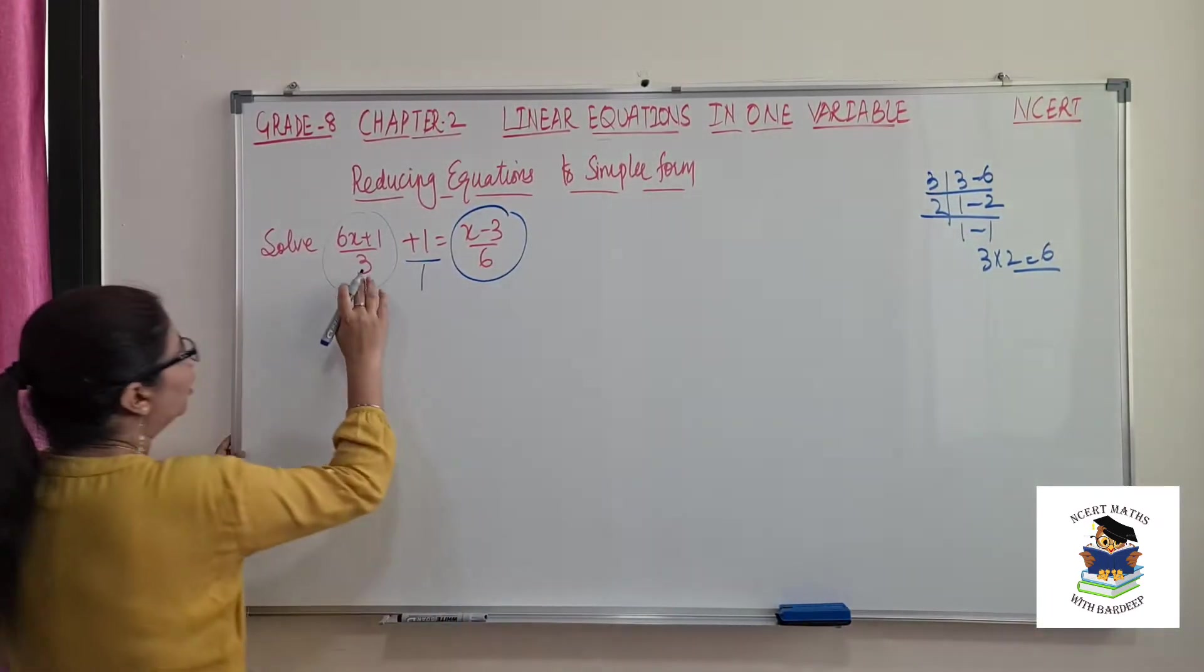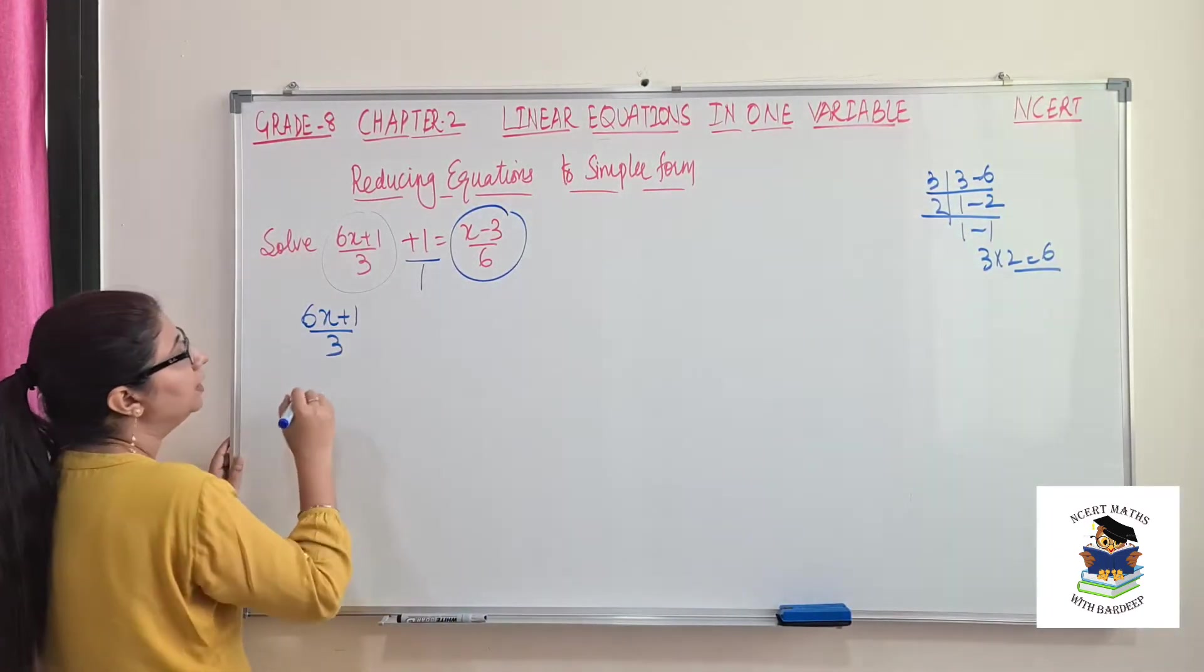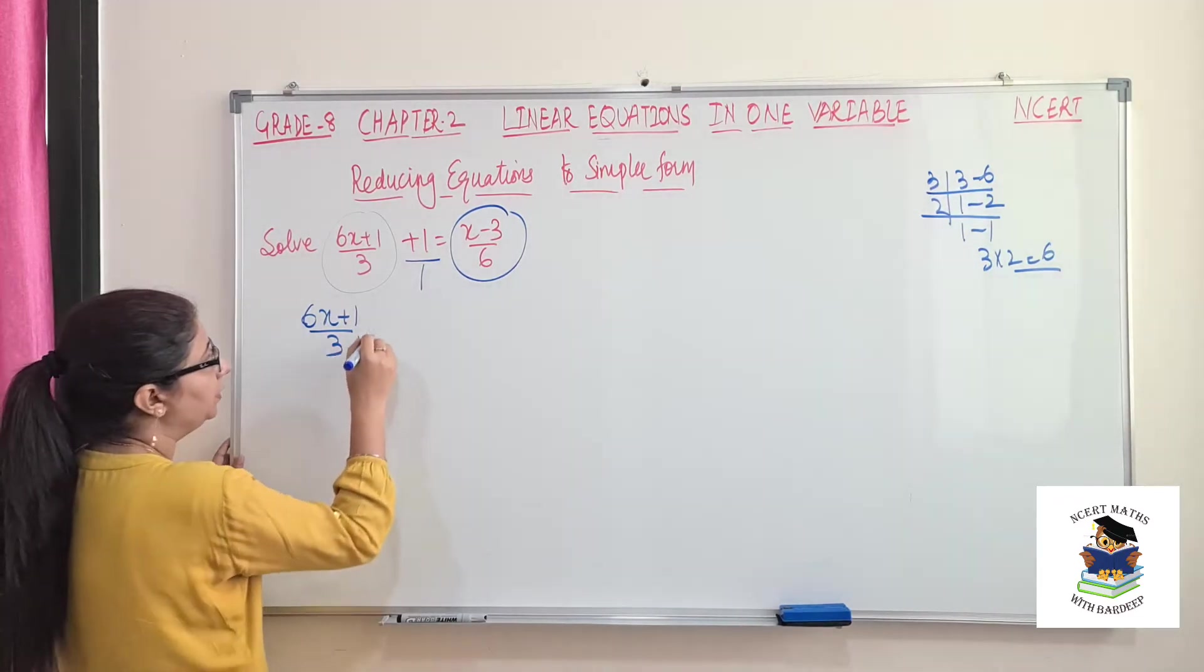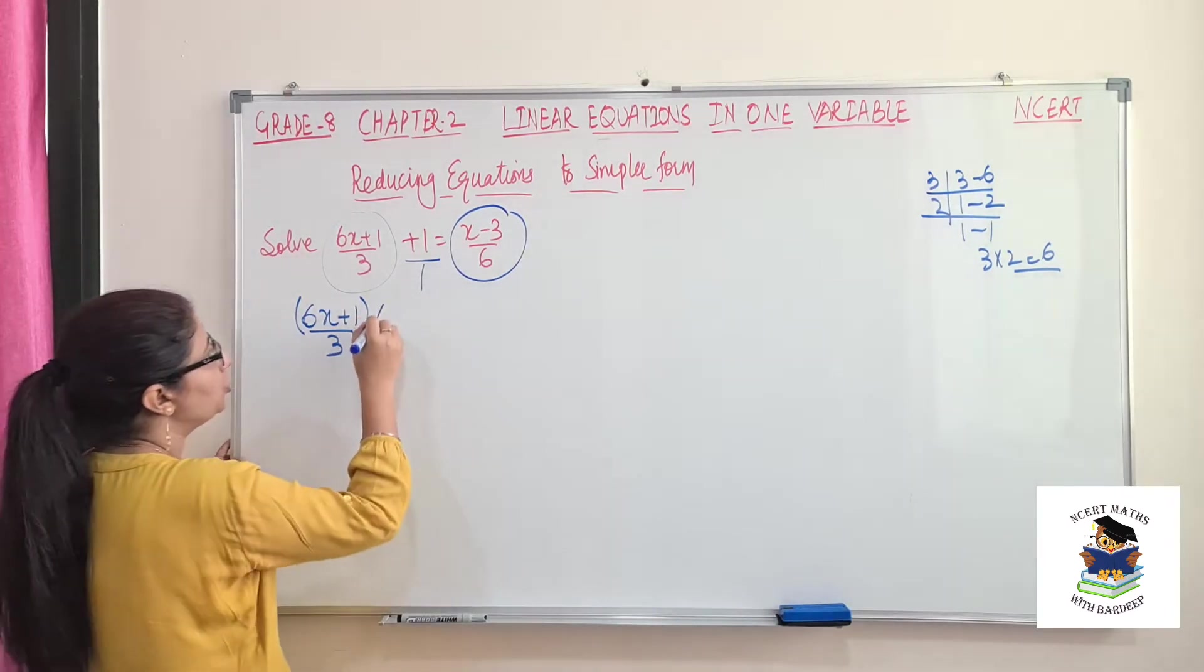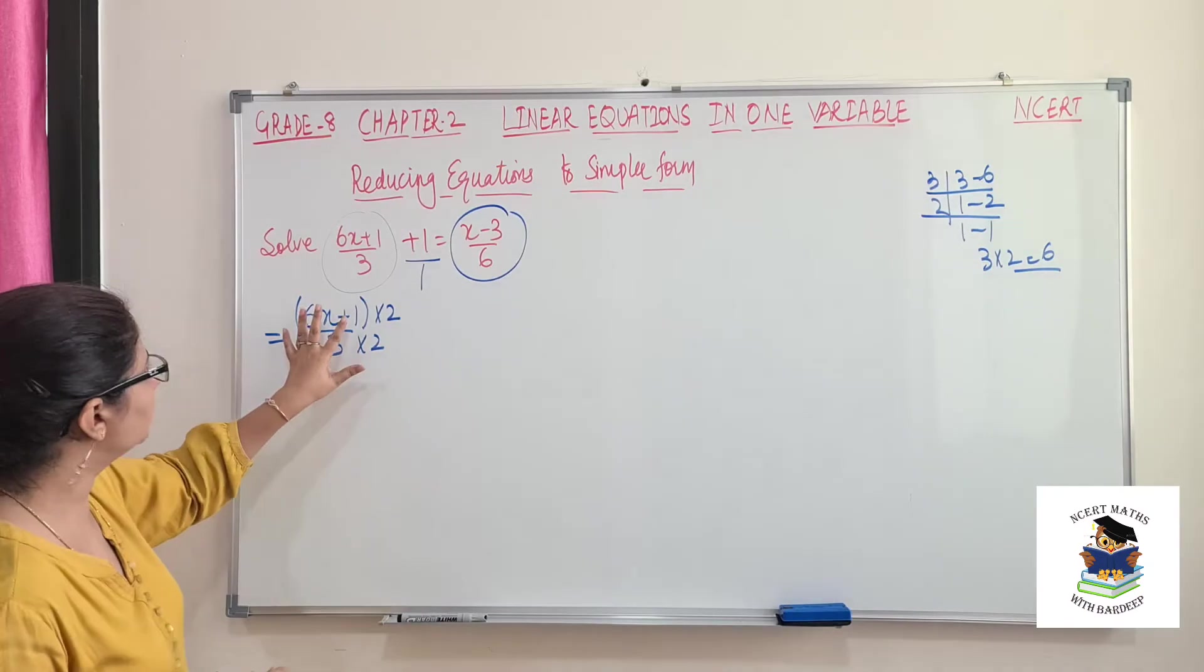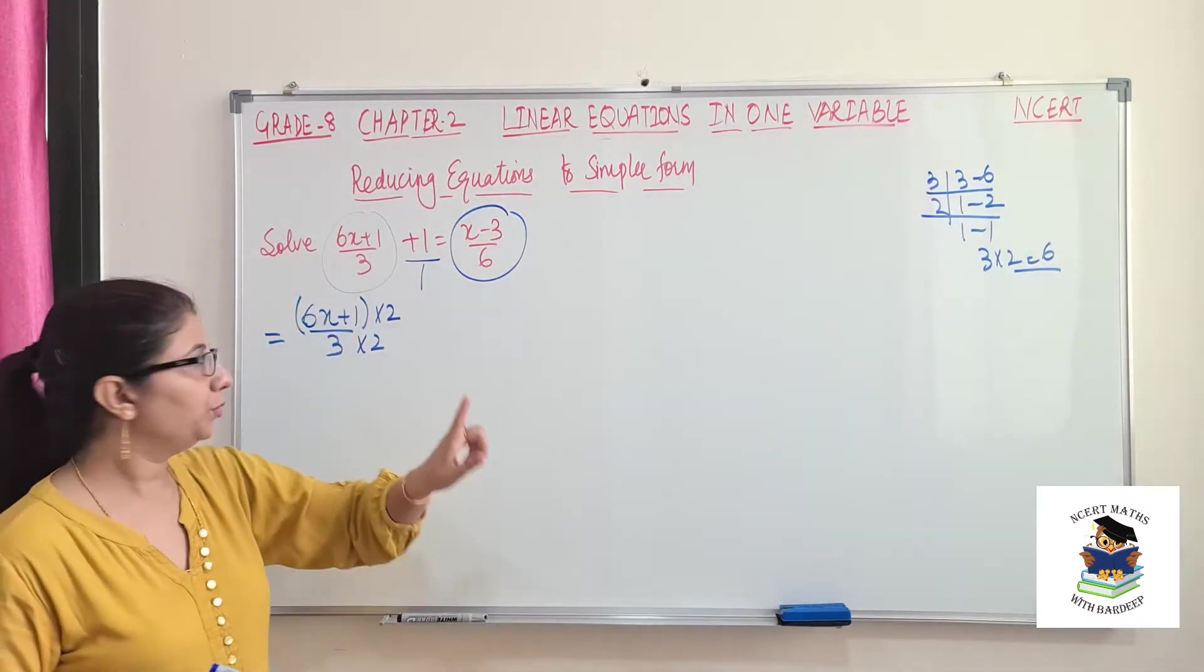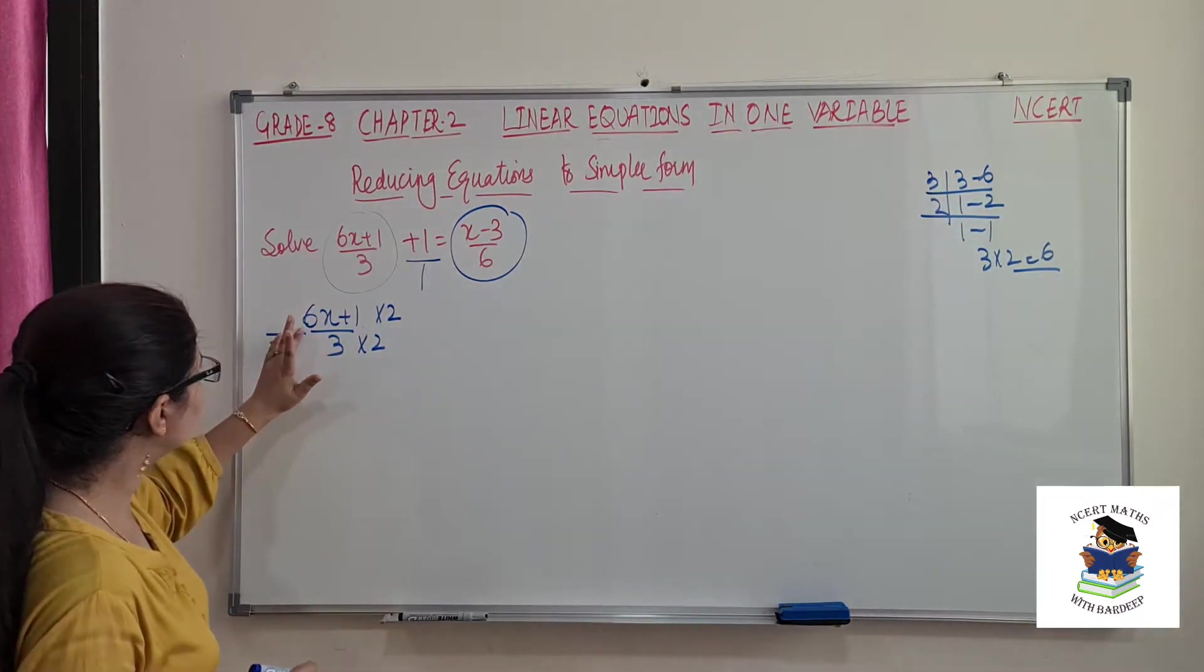So here it is already 3, so (6x + 1)/3, this should be multiplied with 2. So again, since here more than one term is there, you should multiply this with 2, but don't forget to put this bracket.